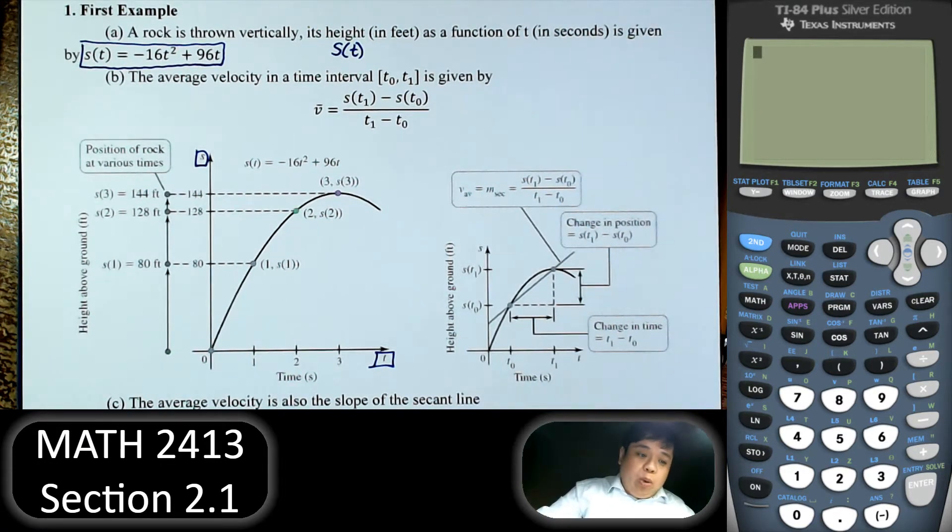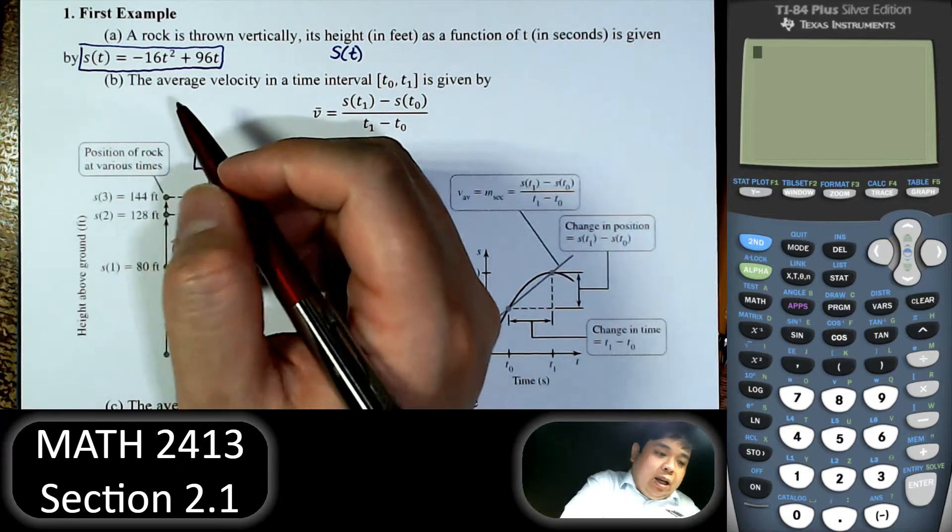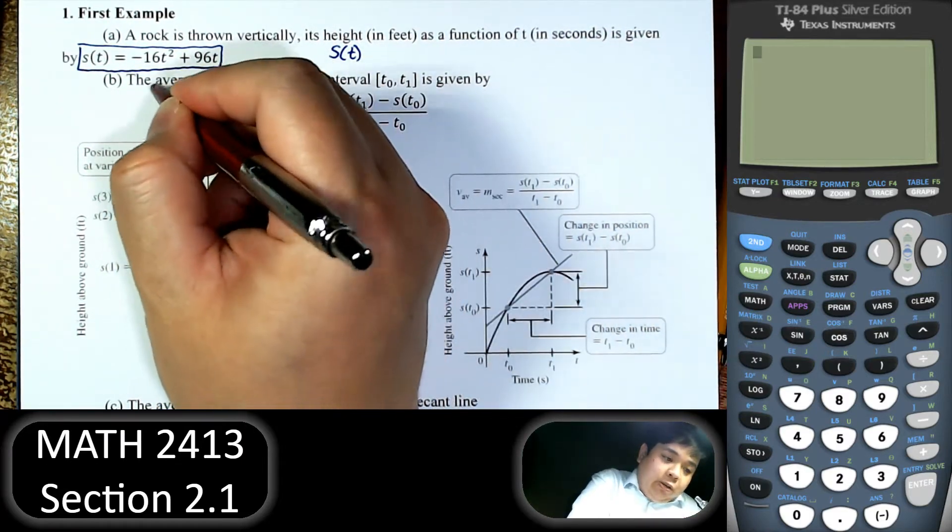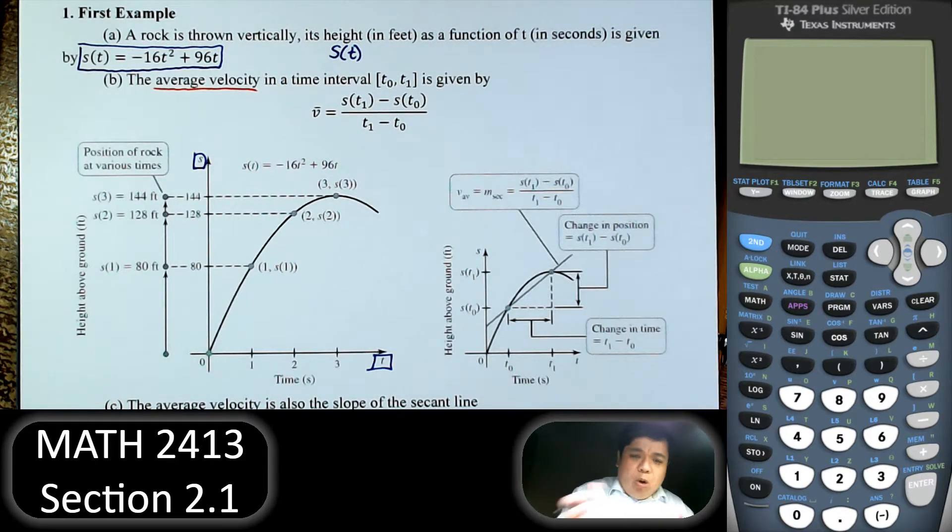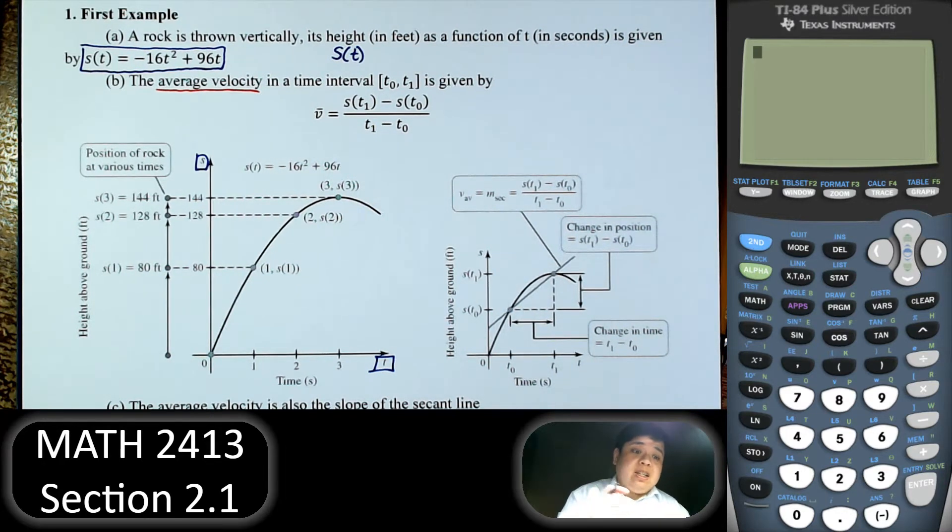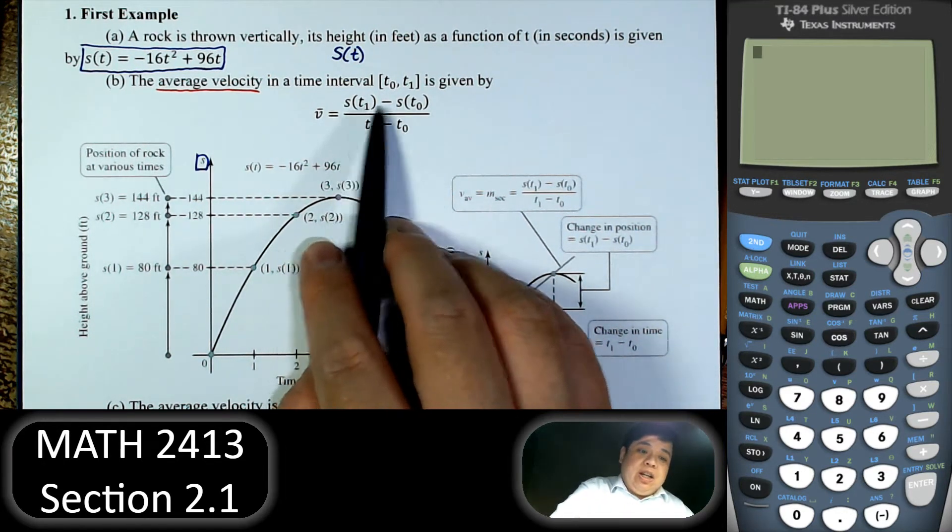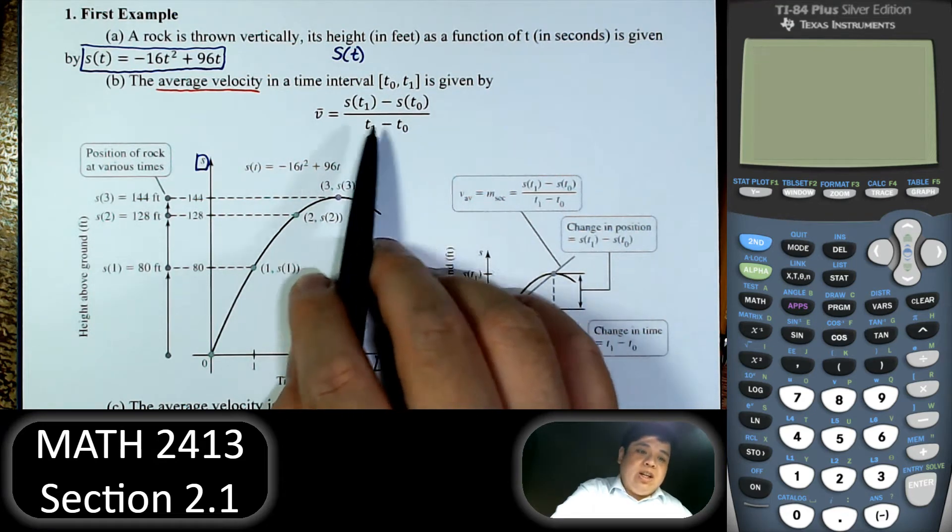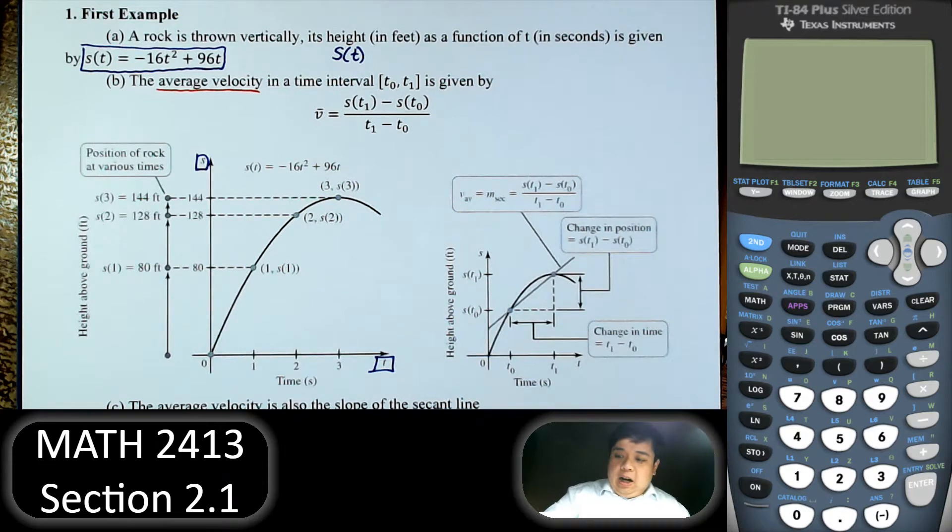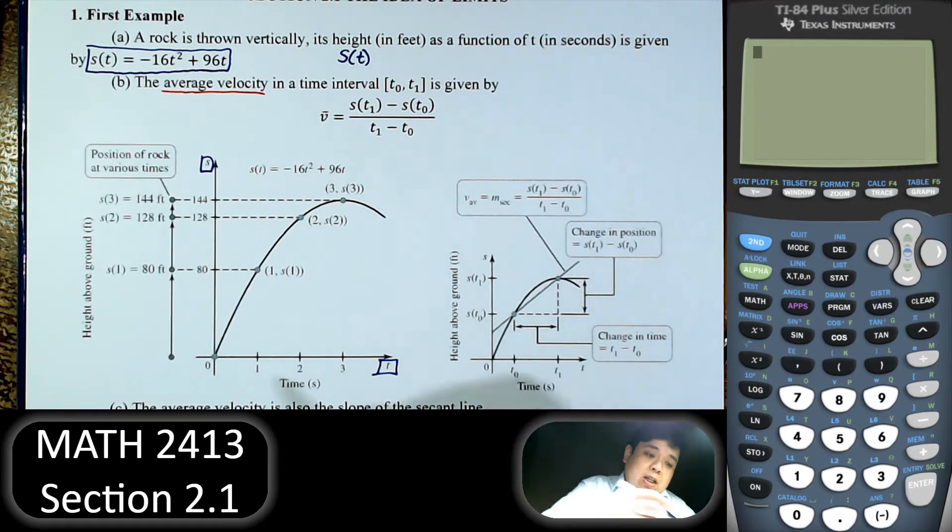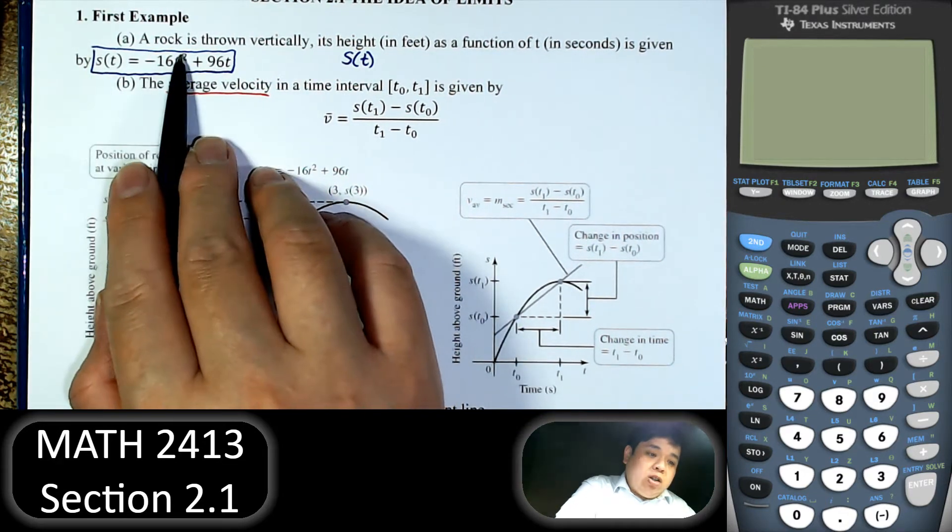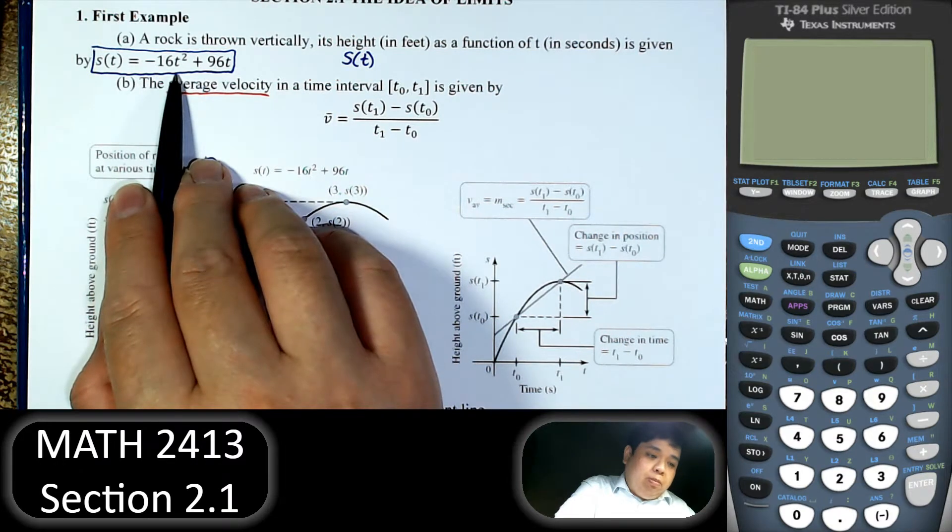Now this example we're interested in the average velocity. So the most fundamental about speed or velocity, the speed is the distance over time. So the change in distance or the change in position over the change in time.